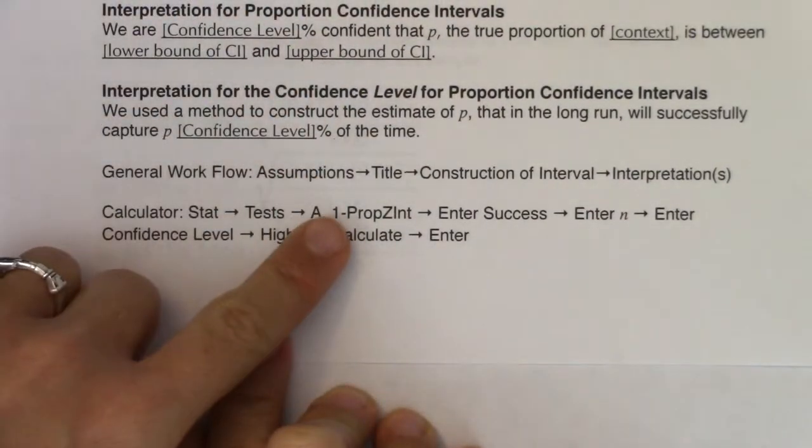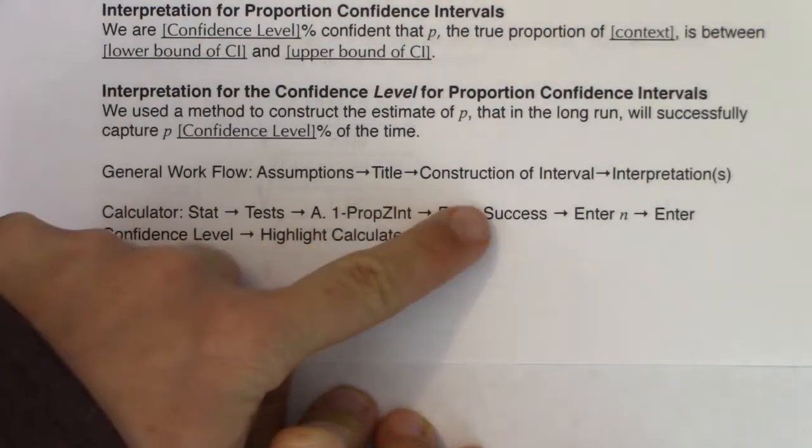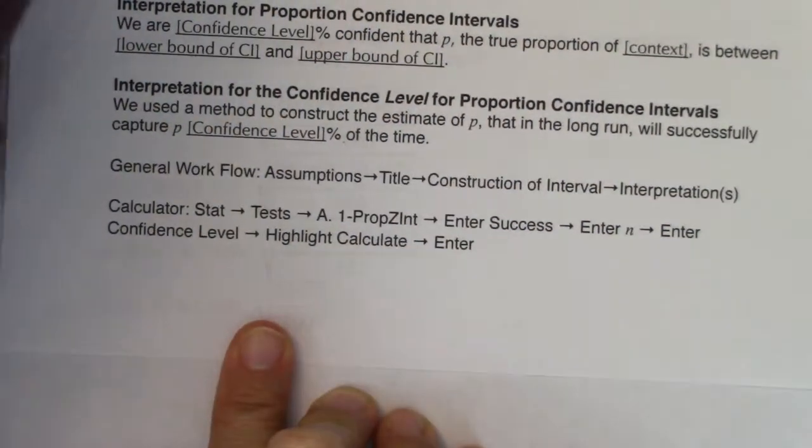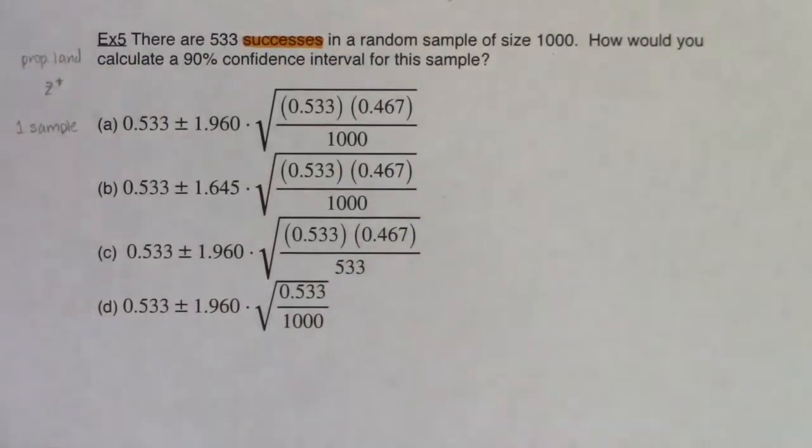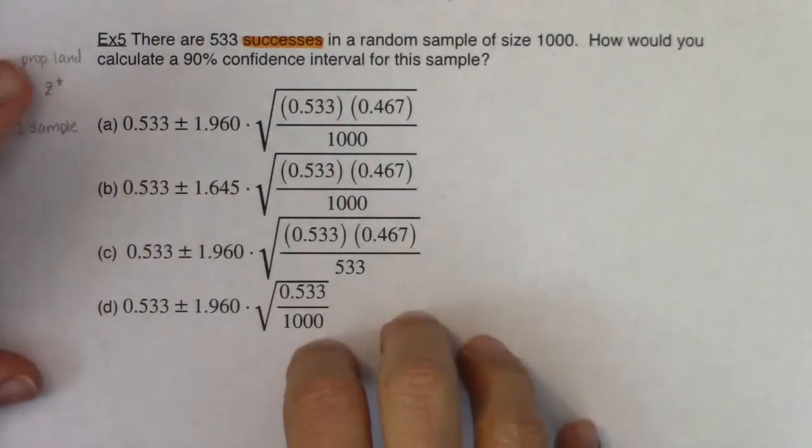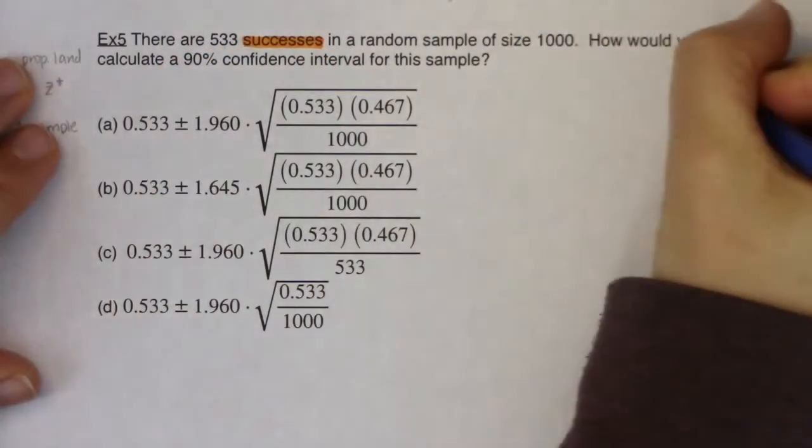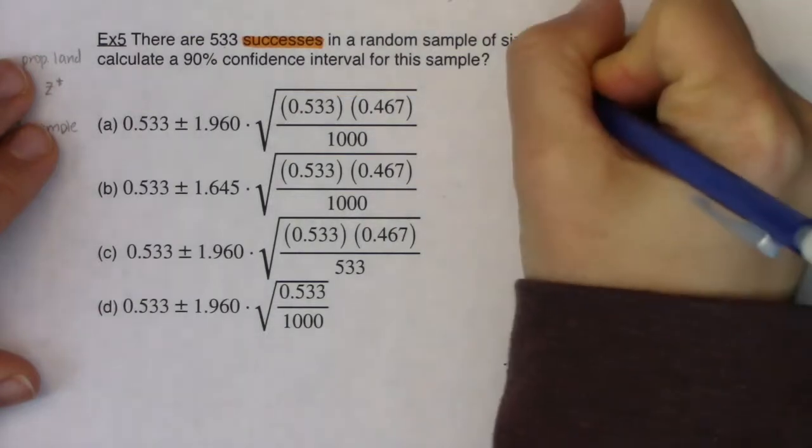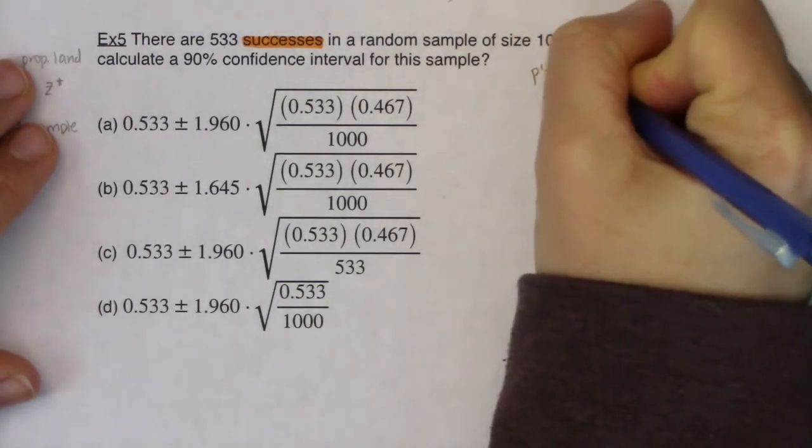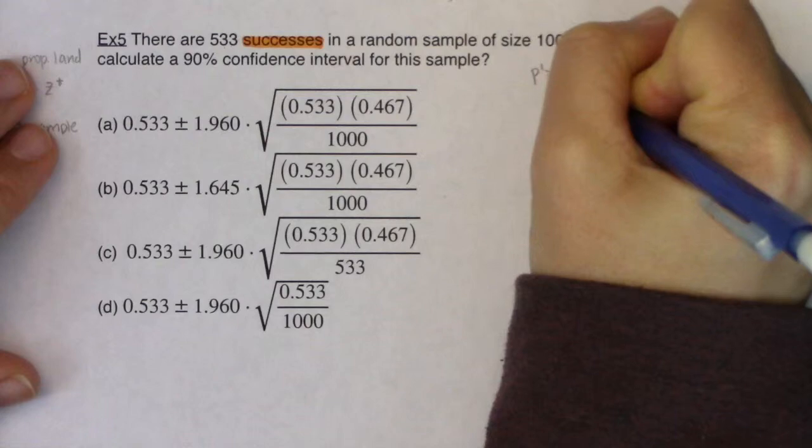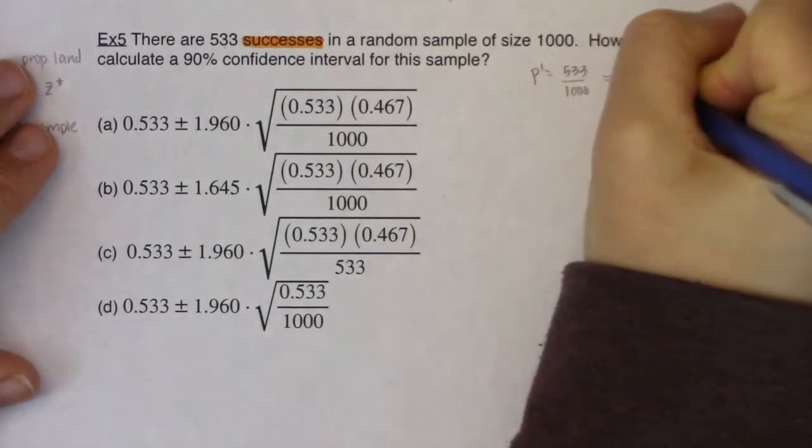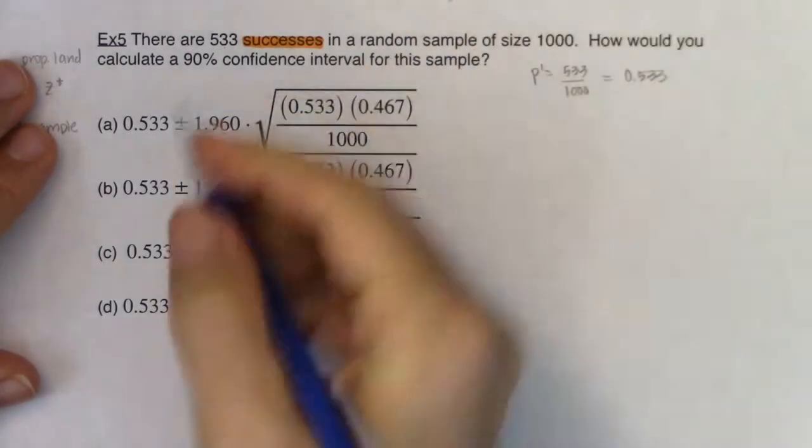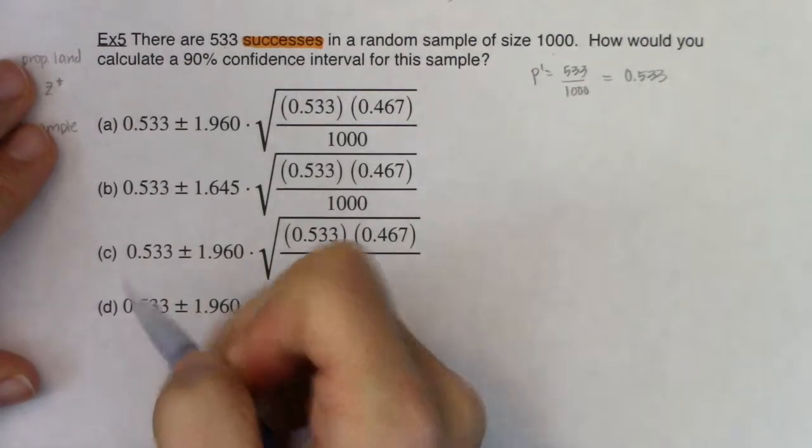You might say, well, it's a multiple choice question. Do I have to do all of that? And the answer is no, you don't have to. But I just want to go through it so that we're practicing it together. So I'm going to go ahead and over here, I'm going to write that my sample proportion, I can see it, it's 533 out of 1,000. So that would be 0.533. And that's where these numbers are all coming from.